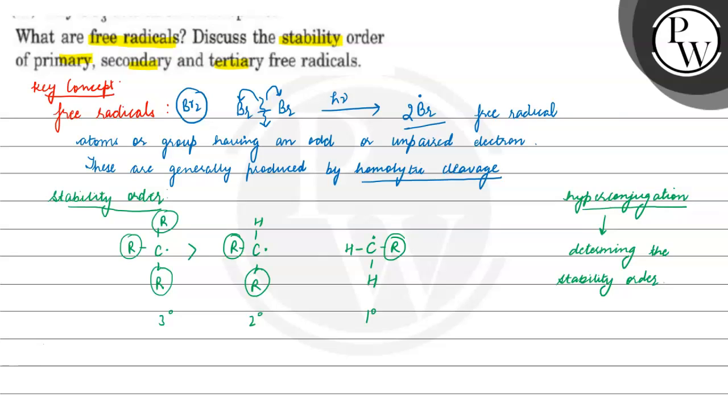So, the hyperconjugation order would be this. If this is the hyperconjugation order, this is the stability order. According to this concept, third degree is more stable than secondary, secondary is more stable than primary free radical. Hope you understood it well, all the best.